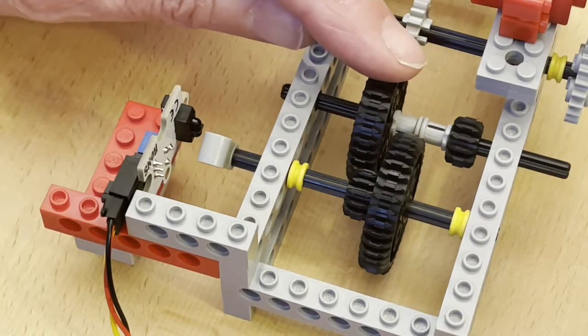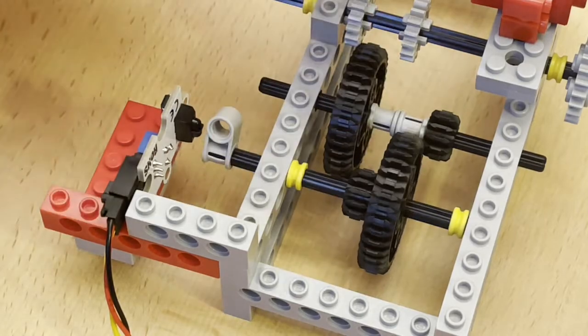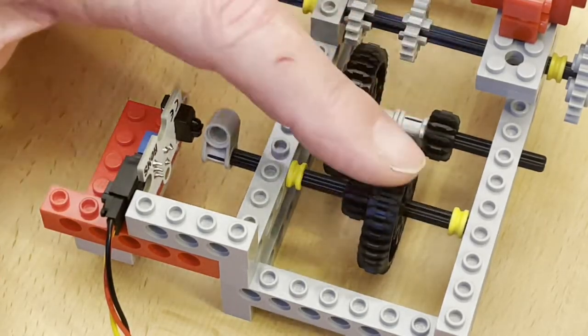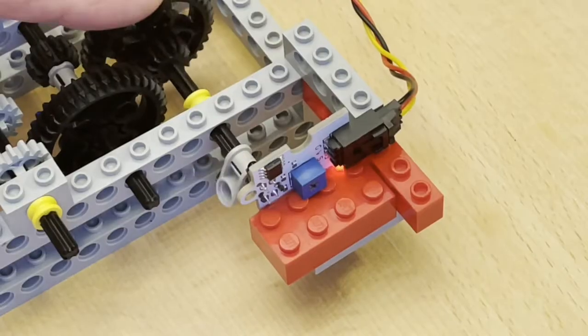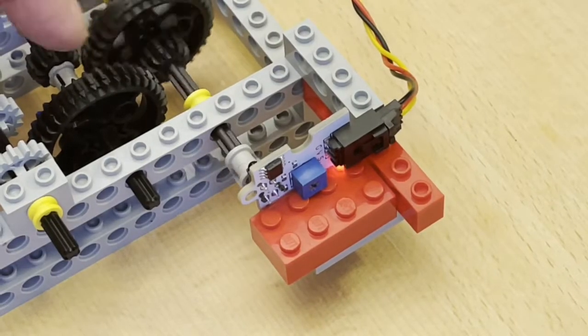If you turn the pointer it passes close to the sensor. When this happens the LED stops illuminating indicating that some infrared light has been reflected.